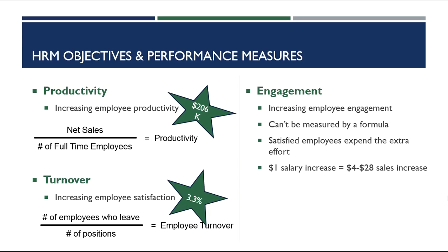The third performance measure is engagement — the emotional commitment by an employee to the organization. Retailers work to increase employee engagement because emotionally committed employees are less likely to leave, lowering turnover. Engagement cannot be measured by a formula. Companies conduct annual engagement surveys asking employees if they feel connected to the company, what they like or don't like — but there isn't a mathematical formula the way there is for productivity and turnover.